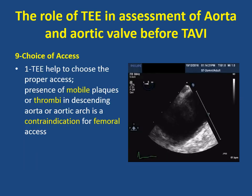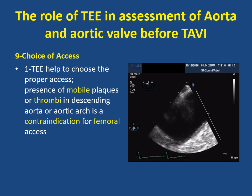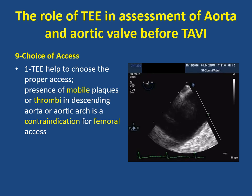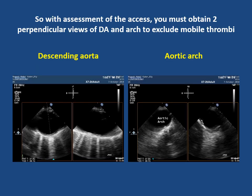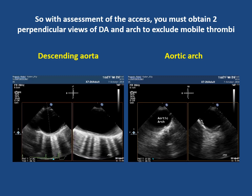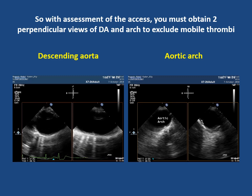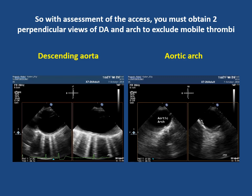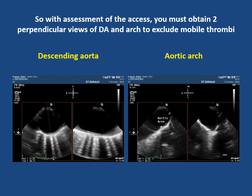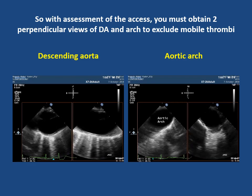Echo also helps in assessment of the proper access site. TEE helps to choose the proper access. The presence of mobile plaques or thrombus in the descending aorta or aortic arch is a contraindication for femoral access. You must obtain two perpendicular views of the descending aorta and aortic arch to exclude the presence of mobile thrombus, and this can be done using the axial plane mode in 3D echo.